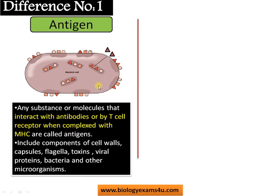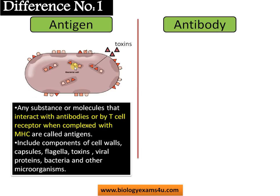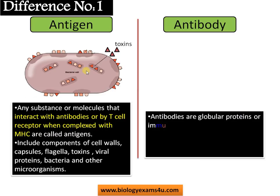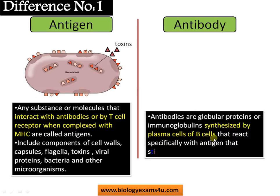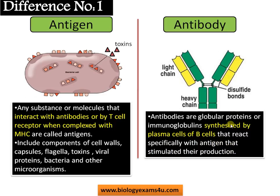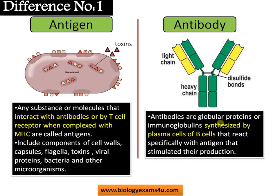Theoretically, any foreign body capable of eliciting an immune response can be called an antigen. Whereas on the other hand, antibodies are immunoglobulins synthesized by plasma cells that react specifically with the antigen that stimulated their production. There are millions of antibodies inside our body specifically designed against different antigens in the surroundings.